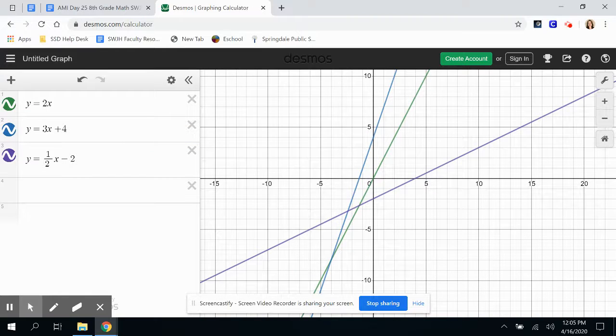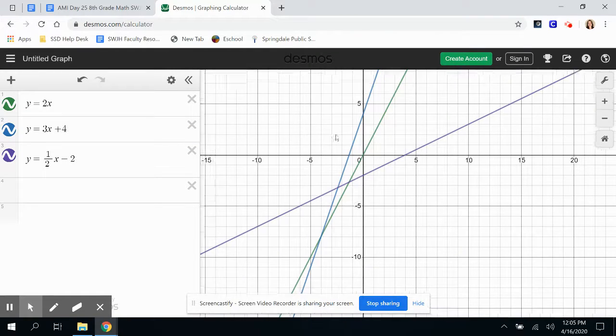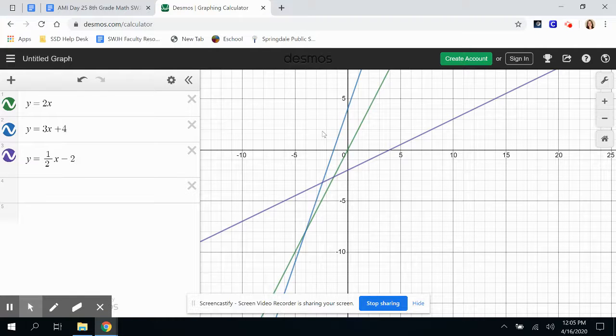If I can zoom out, you can see down here that they will eventually cross if you take your and zoom out some. So if I click on this, you can see right here, if I click on this point, they intersect at negative 4 and negative 8.